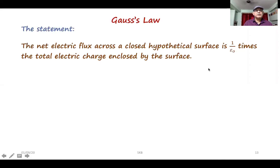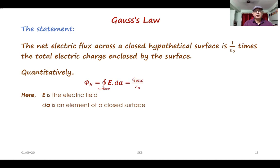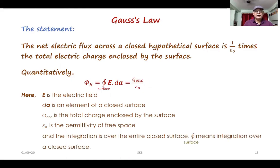The statement of Gauss's law: the net electric flux across a closed hypothetical surface is 1 over epsilon_0 times the total electric charge enclosed by the surface. Quantitatively, the flux through a closed surface is equal to Q_enc divided by epsilon_0. Here E is the electric field, dA is an element of the closed surface, Q_enc is the total charge enclosed by the surface, epsilon_0 is the permittivity of free space, and the integration is over the entire closed surface. The integration symbol with a circle in the middle and the word surface as a subscript denotes integration over a closed surface.